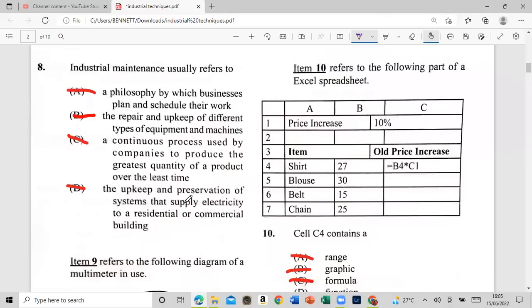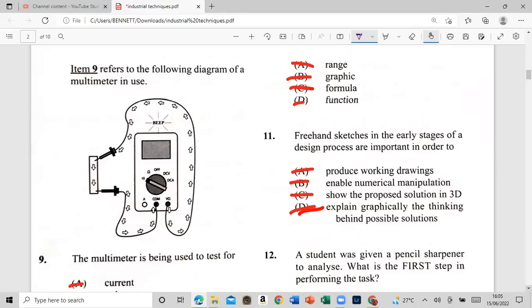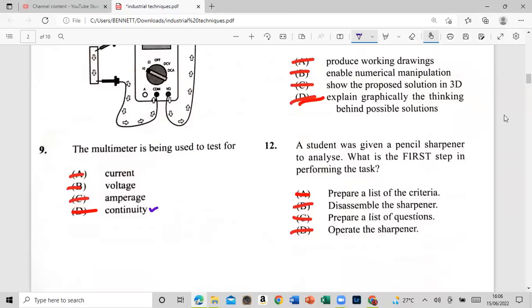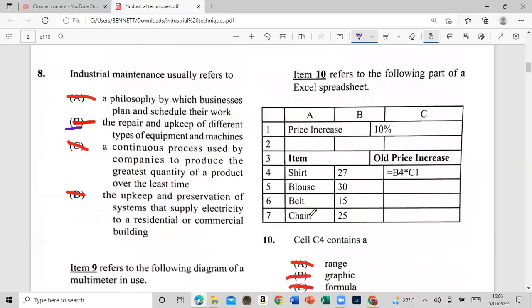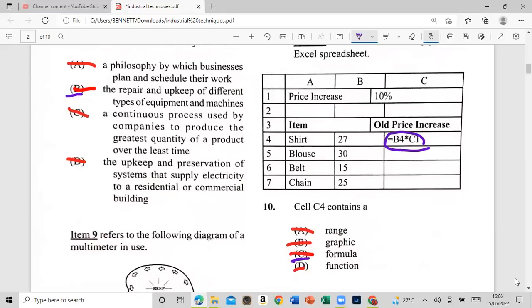Number eight: industrial maintenance we are referred to be repair and upkeep of different types of. Number nine chapter following diagrams of the item in use. The multimeter is being used to test for is it current, voltage, ampere, or continuity? Continuity. And that's the continuity. Right, let's move on to number 10. So it's an Excel sheet spreadsheet and it says cell 4 contains A, is it the range graphic? Cell C4 is a C4. And that would be a formula, right? See the formula right there, that's equal. So number 10 is C.